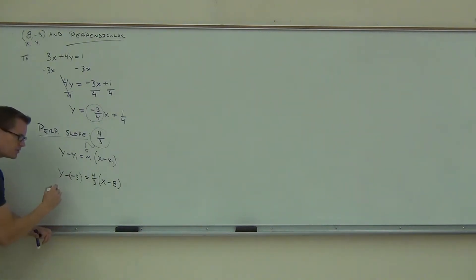After that, we'll simplify just a little bit before we distribute. We'll have y plus three on the left-hand side. And now we'll get to distribute this thing. On the right-hand side, we'll get four-thirds x.